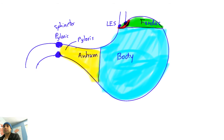You should know the different areas of the stomach: fundus, cardia, body, antrum, pylorus, pyloric sphincter, and gastroesophageal sphincter. The sphincters are supposed to prevent things from coming back.